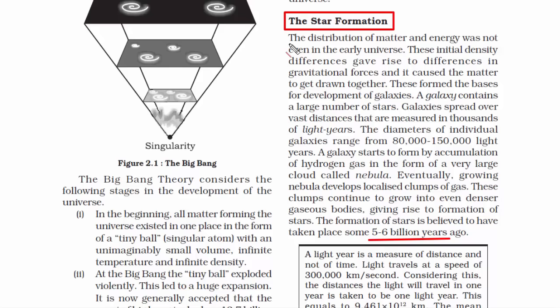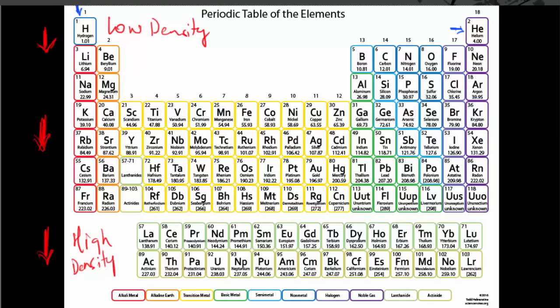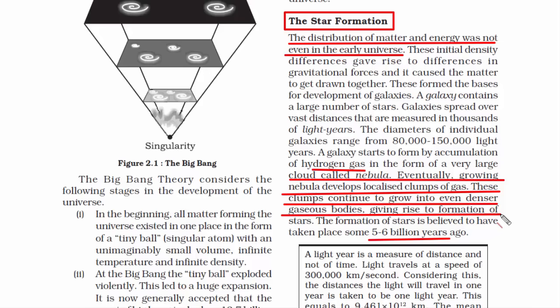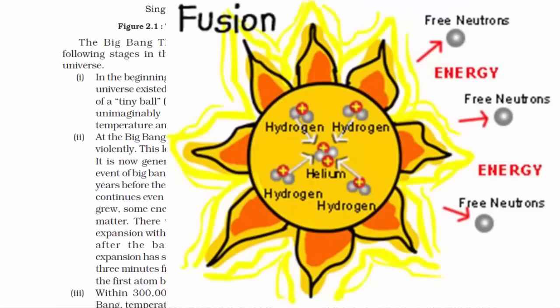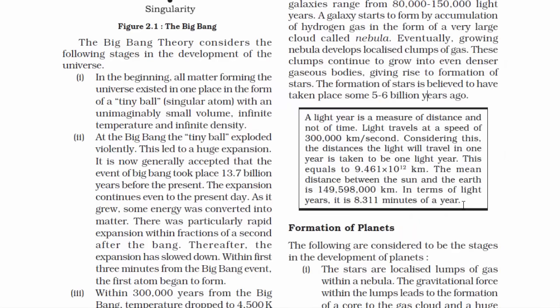Previously we spoke about how matter and energy were scattered in the universe due to the big explosion of the singular atom. The matter and energy were uneven, meaning there were differences in the densities of every matter. Because of that, there was attraction between these matters and that's how hydrogen and helium atoms were formed. There are many tiny groups of hydrogen and helium gases constantly colliding with each other and producing energy. This process is called fusion reaction, where two light nuclei combine together, releasing a vast amount of energy. And this energy gave rise to the formation of stars.